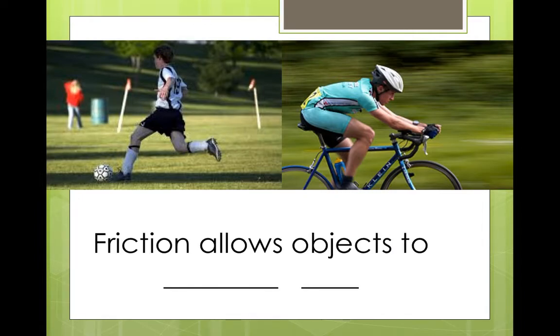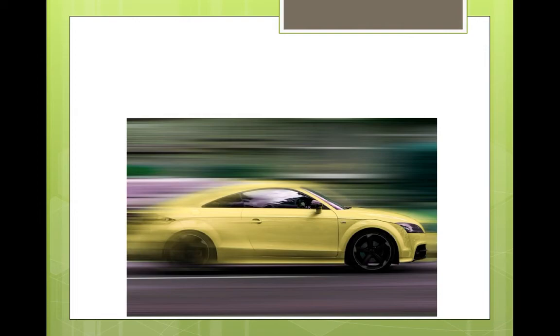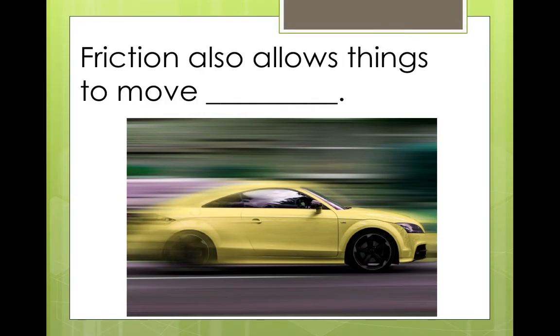Friction allows objects to... Do you think speed up or slow down? In these pictures. Speed up or slow down? Right. Friction allows objects to speed up. Friction allows things to move. What do you think? Faster? Slower? We say faster.